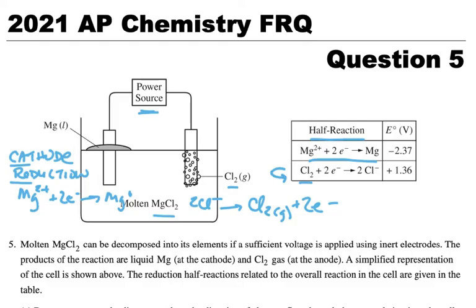Liquid at the cathode and chlorine gas at the anode, so this side is the anode and this reduction has been turned around so this is oxidation. Oxidation always occurs at the anode. A simplified representation of the cell is shown above. The reduction half-reactions related to the overall reaction in the cell are given in the table.